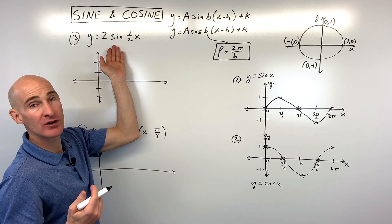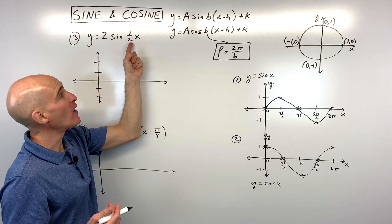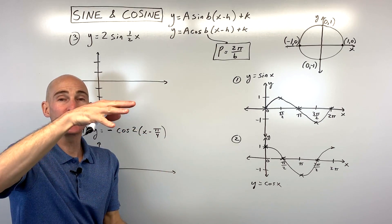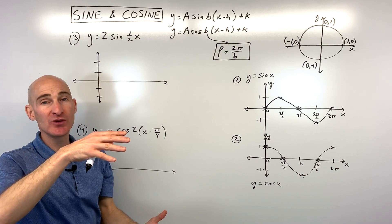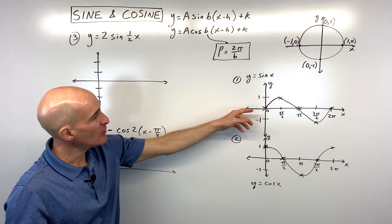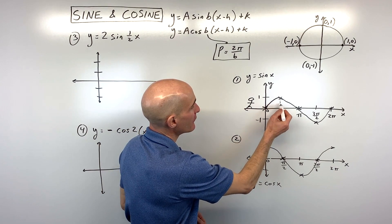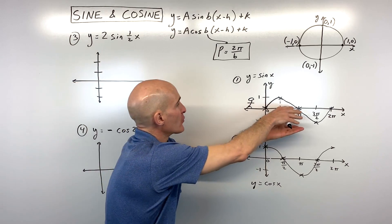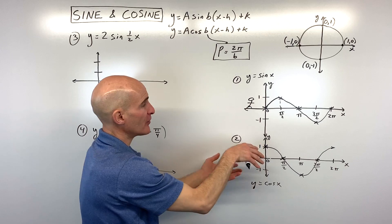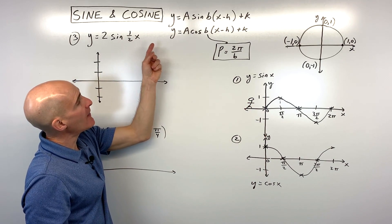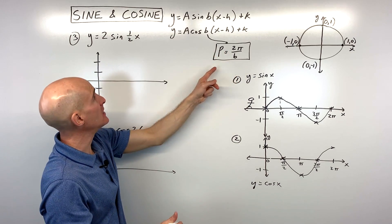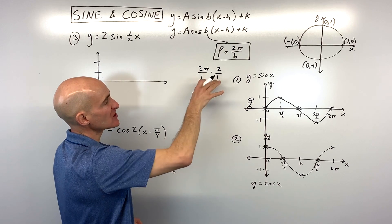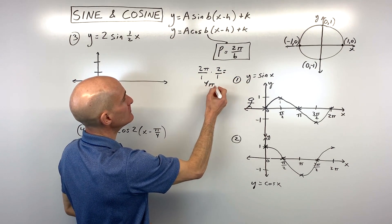Let's start with a basic example: graph y = 2sin(½x). The number in front of the sine is involved with the vertical stretch or shrink — this is what we call our amplitude. If it's greater than one it's a stretch; between zero and one it's a shrink. Here the amplitude is two, so it's a vertical stretch by two. The ½ is related to the period through the formula 2π divided by b. So 2π divided by ½ is like multiplying by the reciprocal, giving us a period of 4π.